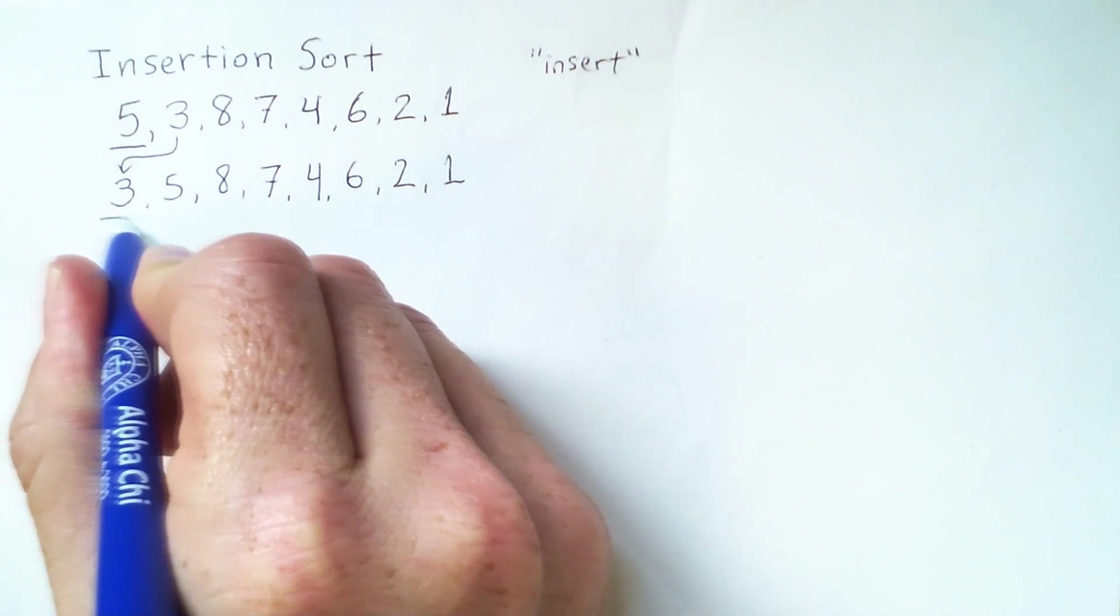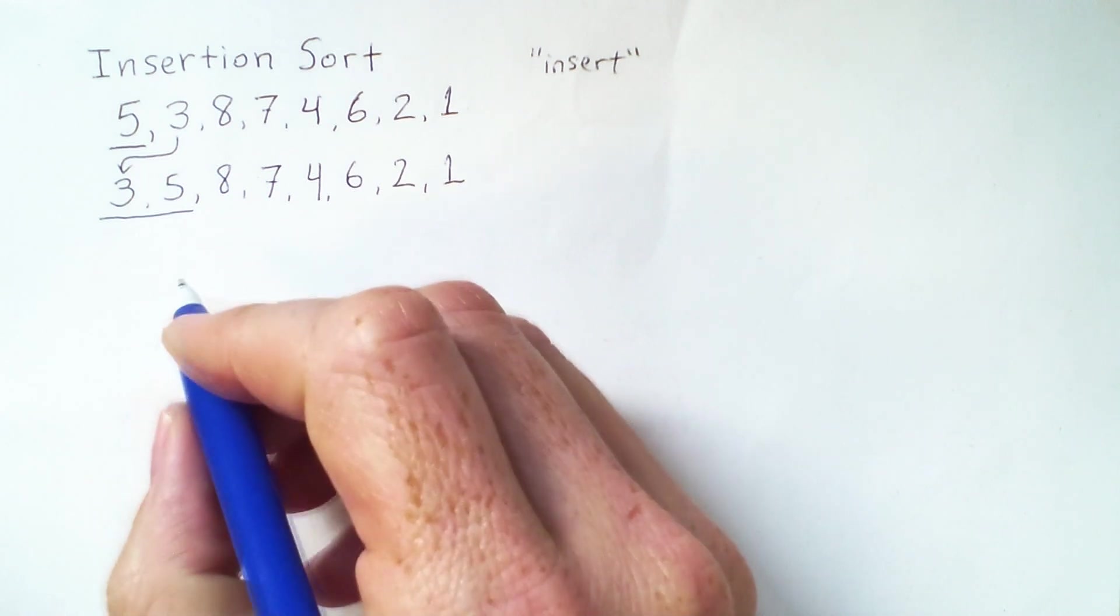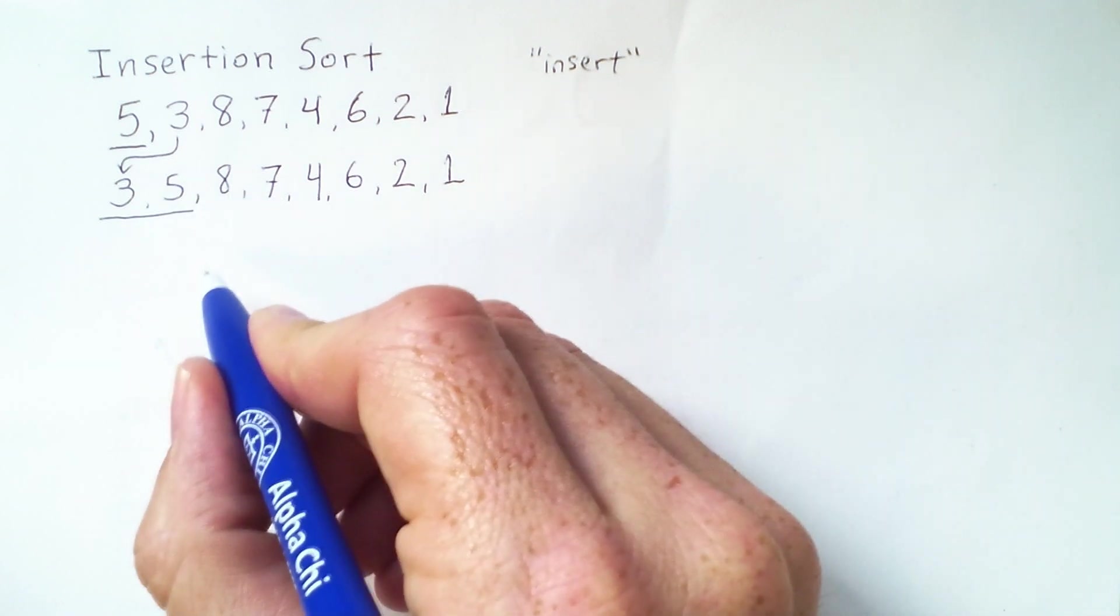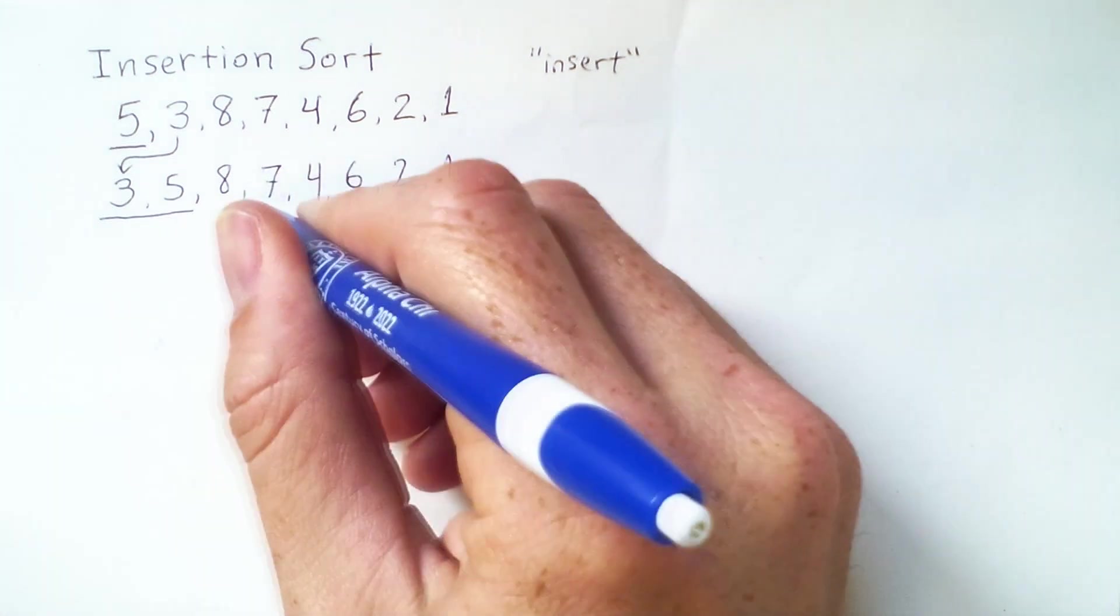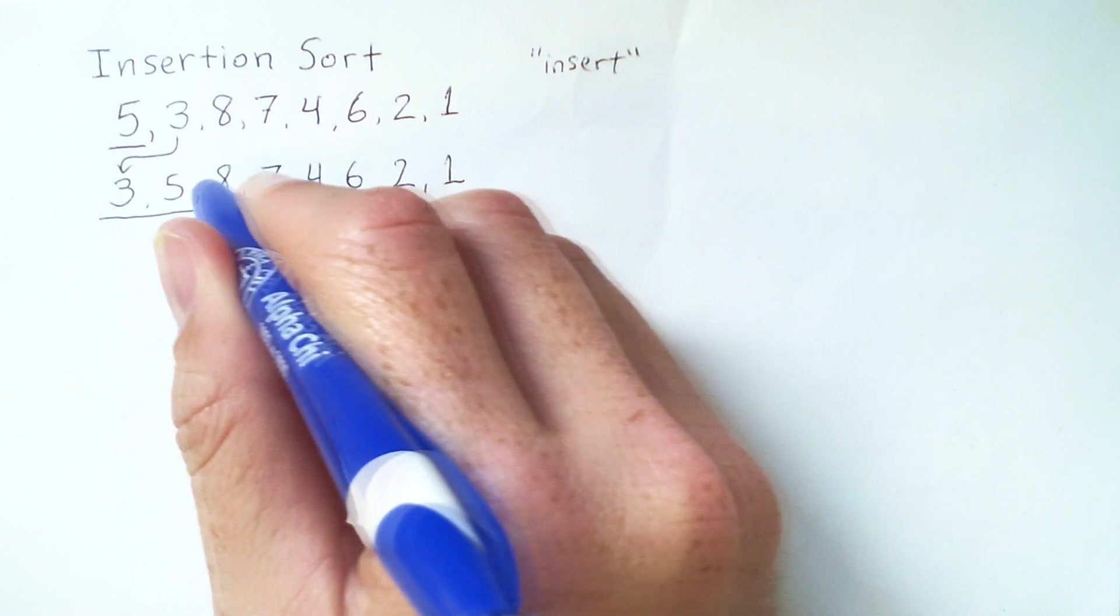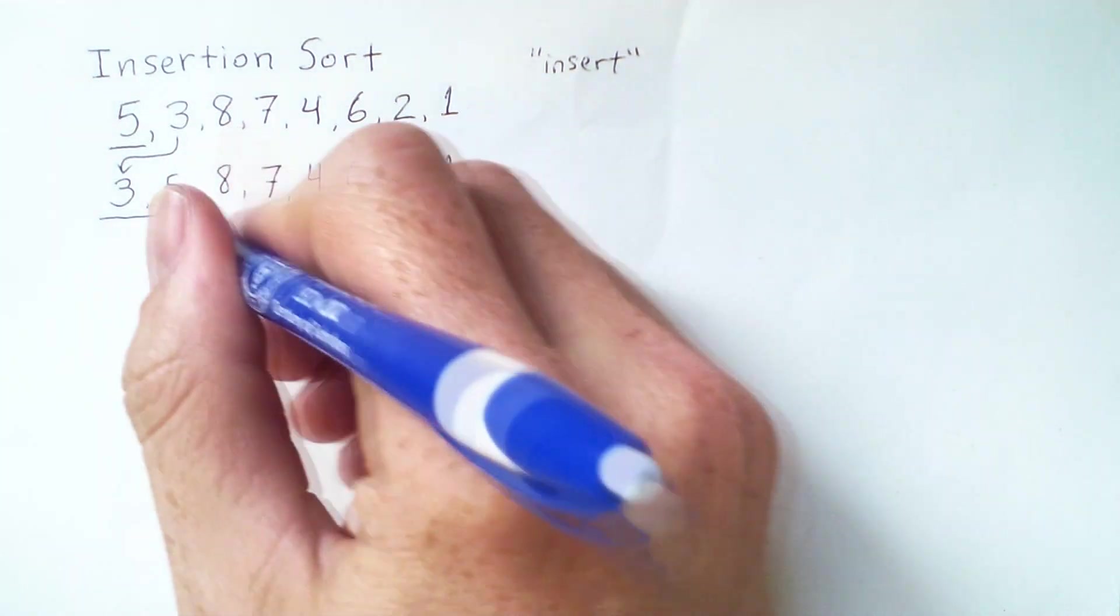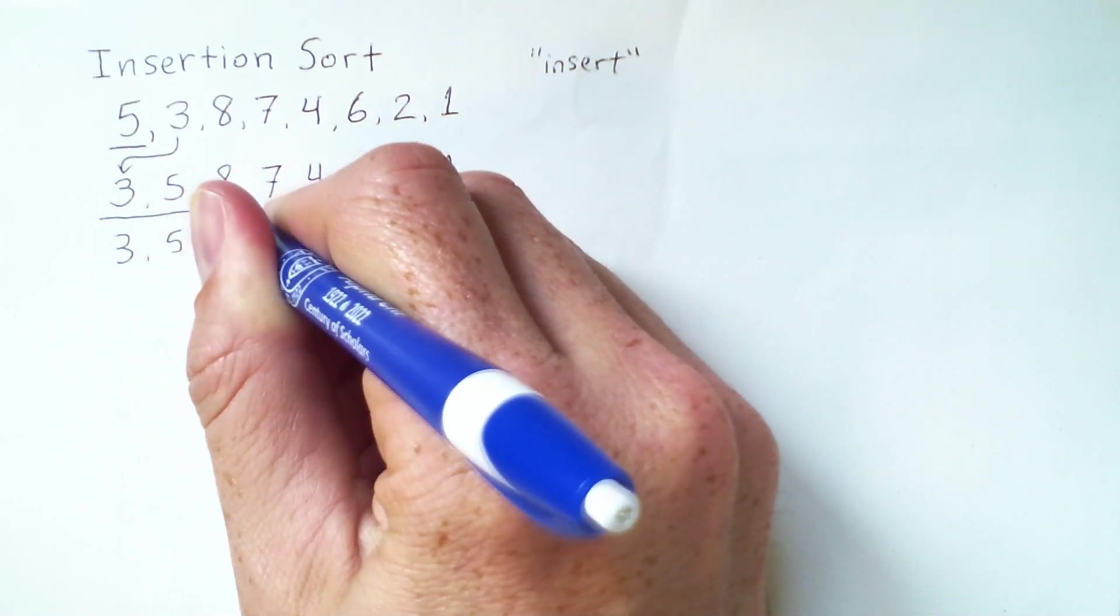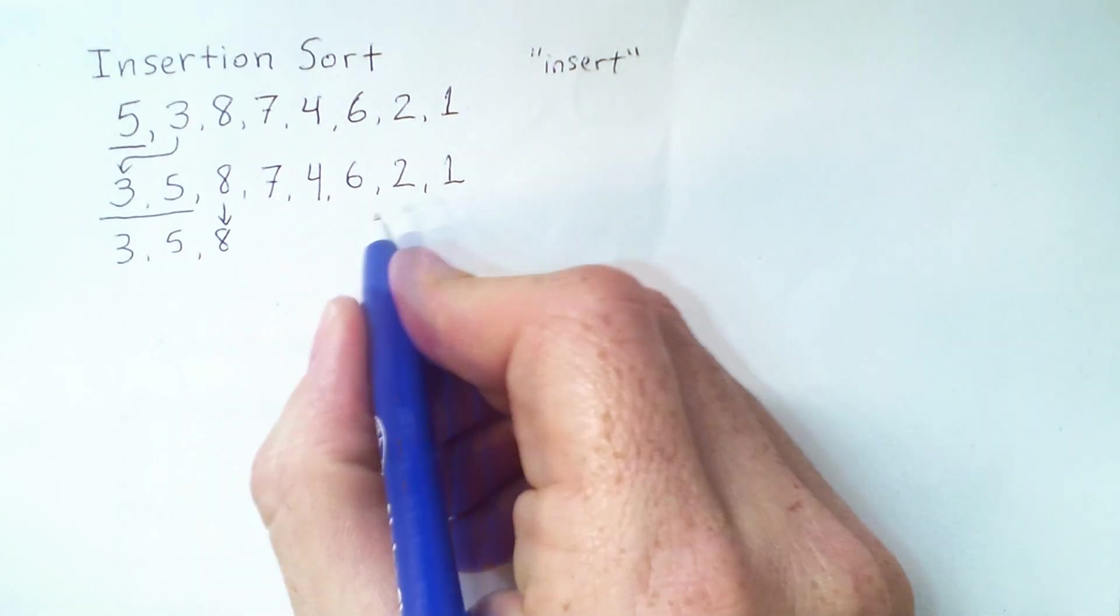So now these two elements are guaranteed to be sorted with respect to each other, and the next element that I will insert is the 8. Now, as with selection sort, we sometimes have a special case where nothing actually happens. The 8 is greater than 5. So if I want to insert the 8 into this subarray of 3, 5, I don't have to change anything. I just keep the 3 and the 5 where they are, and I leave the 8 where it is.